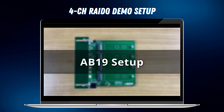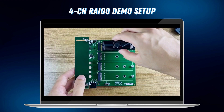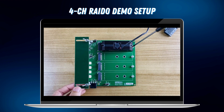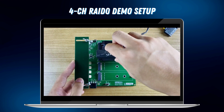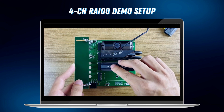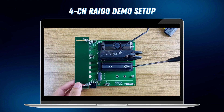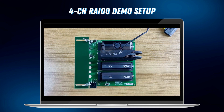To set up the RAID 0 demo, follow these steps for hardware configuration. Firstly, connect the 4 NVMe SSDs to the AB19 adapter board. Connect one SSD to CN1 and the remaining ones to CN2, CN3, and CN4.